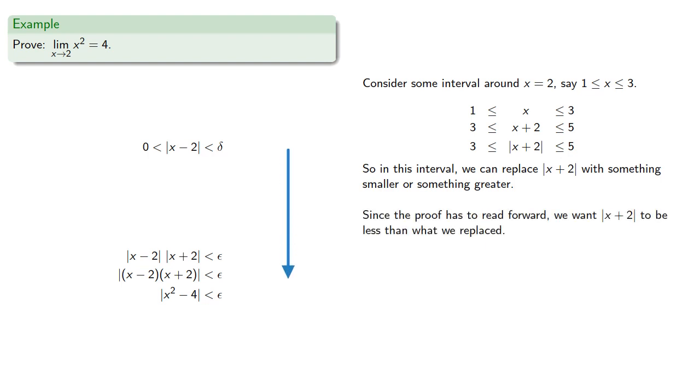Now, since our proof has to read forward, we want x plus 2 to be less than what we replaced. In other words, on the previous line, we had something. We replaced it with absolute value of x plus 2. And because that was smaller, we maintained the inequality.